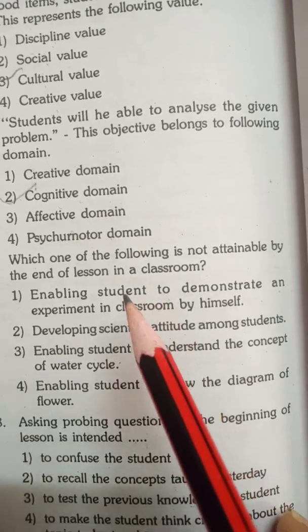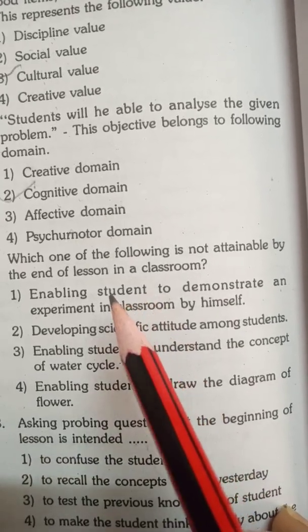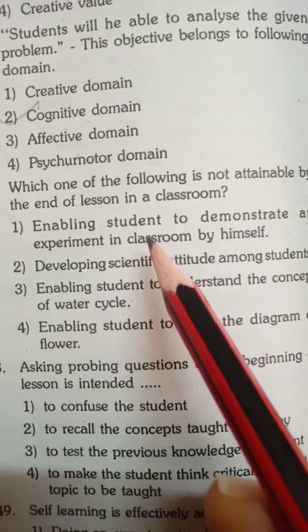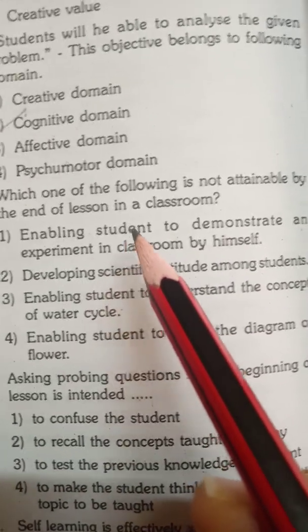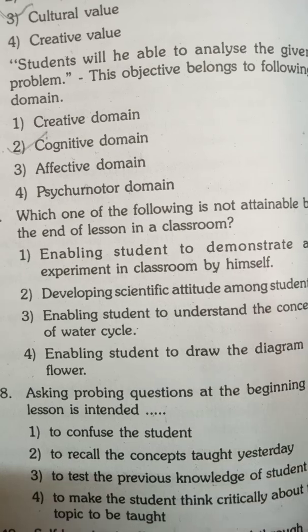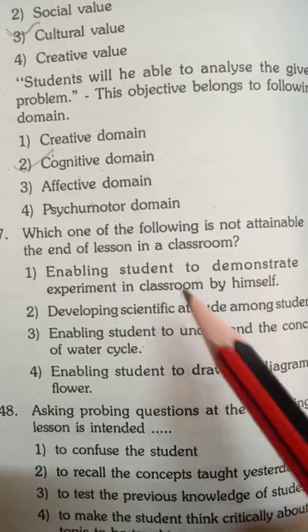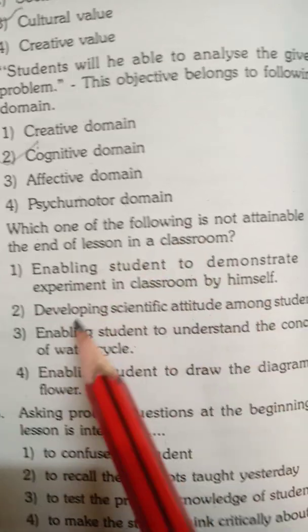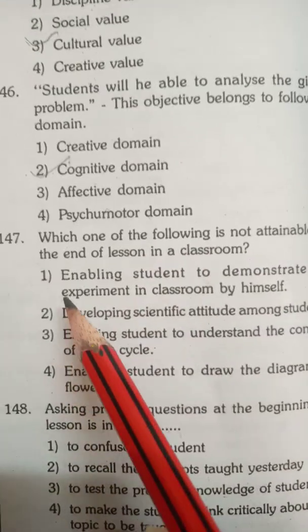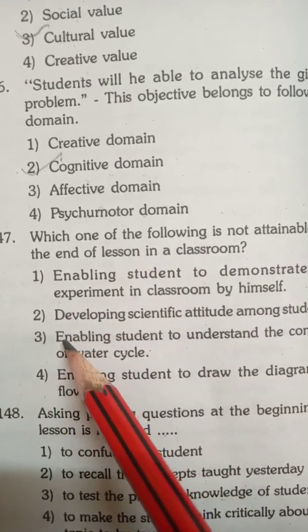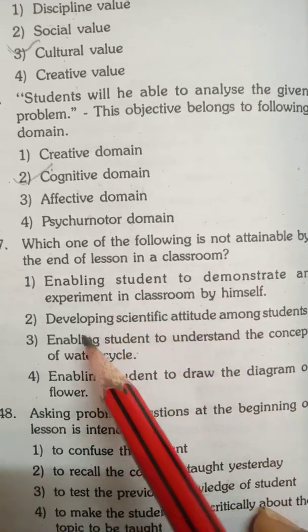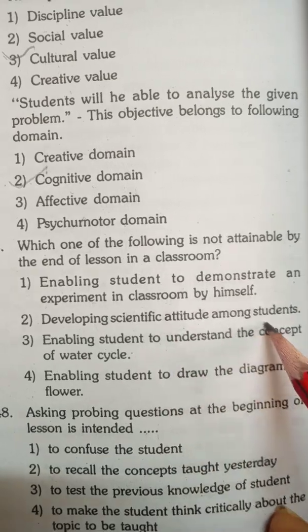Which one of the following is not attainable at the end of a lesson in a classroom? The answer is: enabling a student to demonstrate an experiment in the classroom by himself is attainable, whereas developing scientific attitude among students is not attainable at the end of a single lesson.